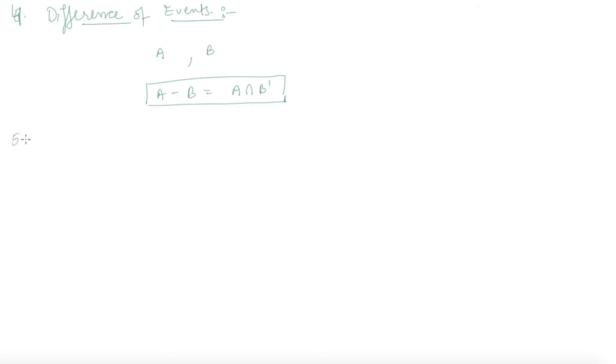Now let's discuss mutually exclusive events. When one event happens, the probability of happening a second event is zero, means there is no common part in these two events. Let's say event A has elements 1, 3, 5, all the odd numbers, and event B has elements 2, 4, 6, all the even numbers. They are both mutually exclusive, means A intersection B is a null set.